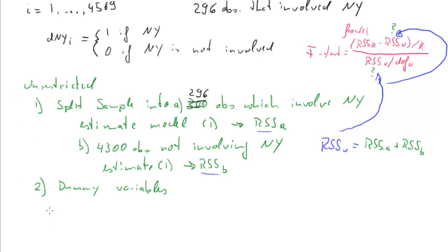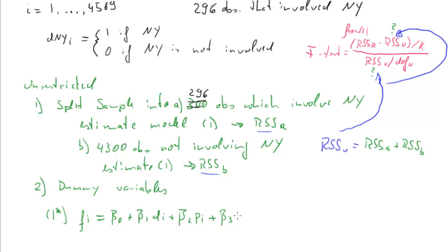We estimate model 1* — I use beta instead of alpha since this is a different model with different coefficients. The model is: fi equals beta naught, plus beta 1 times di (distance), plus beta 2 times average passenger numbers, plus beta 3 times market share, and so forth all the way through to beta 6 times the year-2000 dummy variable.